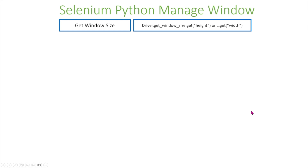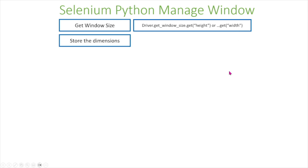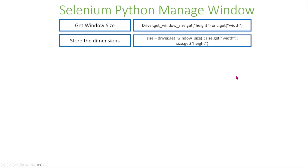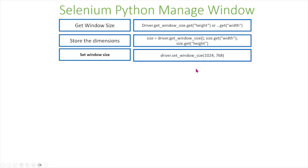The first command we're going to be covering is get window size. Like this says, we're just getting the size of our window. One command you can use is driver.get_window_size().get('height') or you can get width depending on what dimension you want. You can also store these dimensions using a variable by using get_window_size and not specifying what specific dimension you want, and then afterwards you can get the width and height separately. You can also set your window size using set_window_size, specifying 1024 pixels by 768 pixels.